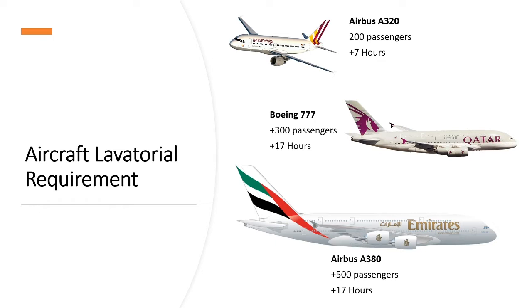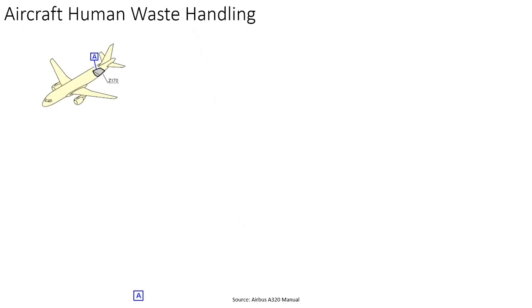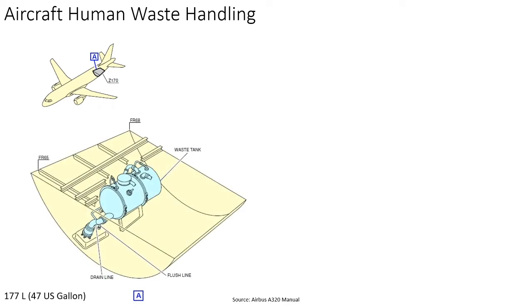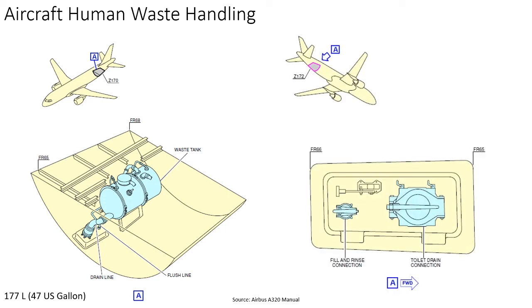All commercial aircrafts have a specialized system for handling waste. If you look at the design of an Airbus A320, the toilets are located towards the tail of the aircraft, and similar is the case with most other aircrafts. All wastewater from the toilets is collected in a waste tank, which for a narrow body aircraft like an A320 can be of nearly 200 litres capacity. The drain line and flush line of this waste tank are carried to an outlet located near the tail of the aircraft, which is used by lavatory service equipment to connect with the aircraft.